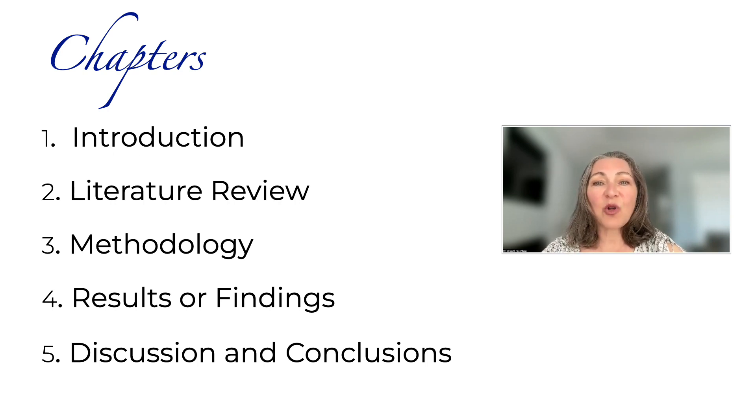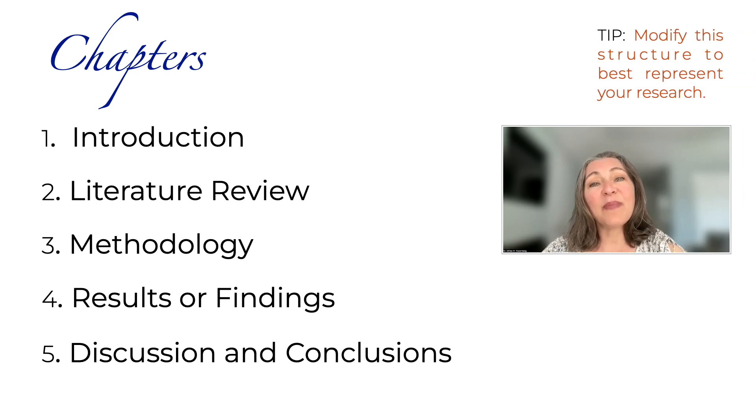Also, this is the typical ordering of the chapters, but I saw a thesis that reversed the literature review and the methodology chapters. So you can modify this structure if you feel there is a better way to represent your research. The important thing is to rationalize or justify the decisions you make. It should be clear why you have seven chapters, for example, or why methodology is chapter two and not chapter three. Let's have a look at each chapter.